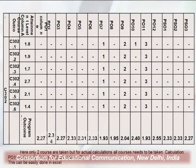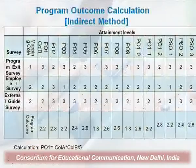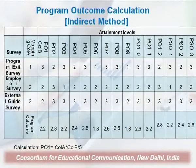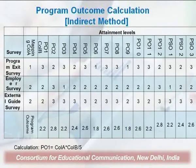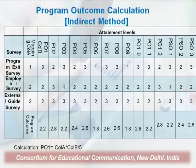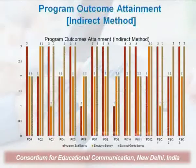This is just an illustration of how to make a matrix and do the calculations in Excel sheets. This is the program outcome calculation in the direct method. You can see the program exit survey, the employer survey, the external guide survey, and the program outcomes. After taking the direct method into consideration, the indirect method also shows the attainment level. There are 2 methods of calculating program outcomes, and the indirect method takes into account the various surveys.